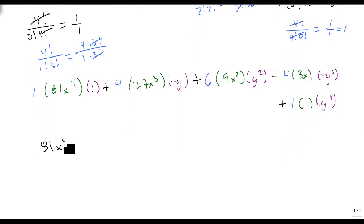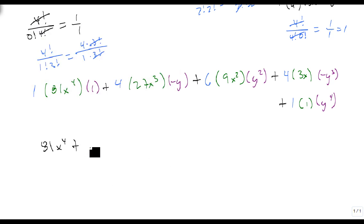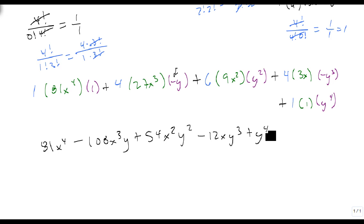It's simply 81x to the 4th, plus 27 times 4 is 108, no, minus, because of the minus here, minus 108x cubed y, plus 54x squared y squared, minus 12xy cubed, plus y to the 4th. And we now have our binomial.